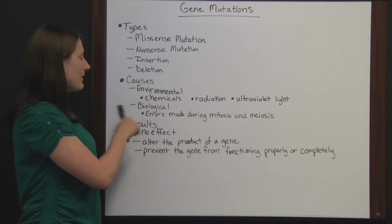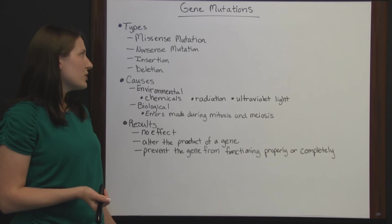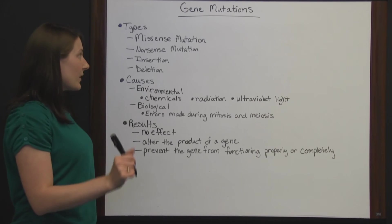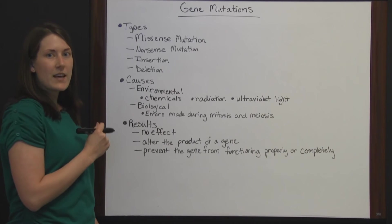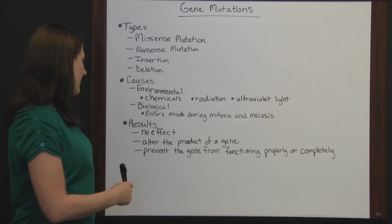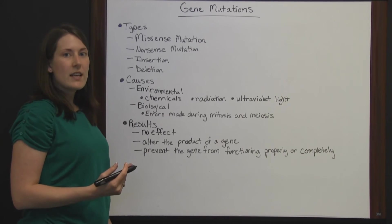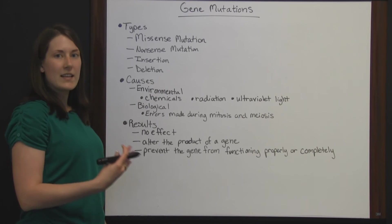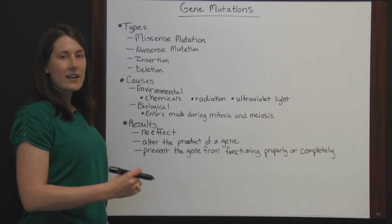You can have environmental causes and biological causes for gene mutations. As for the results of mutations: the original course of that DNA sequence is altered, so something else is going to happen. There could be no effect — if that DNA chain ends and that function isn't carried out, it may have no effect at all.